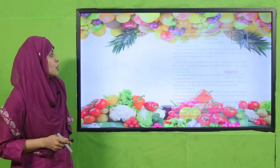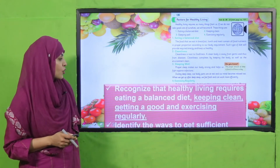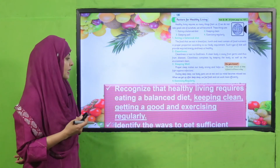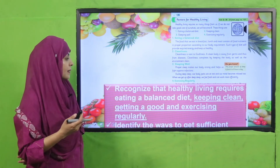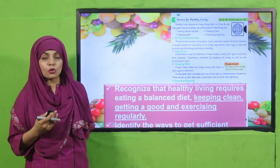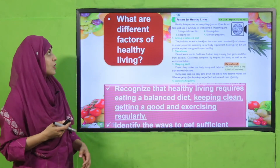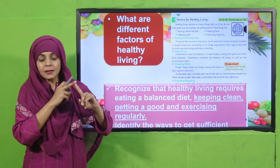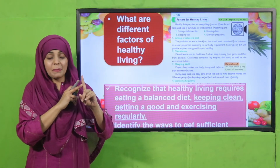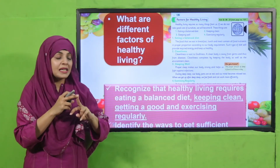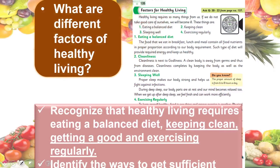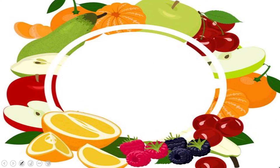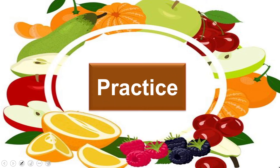In the next lecture, we studied that keeping clean, eating well, and exercising regularly also keeps us healthy. The different factors of healthy living are: a balanced diet, keeping ourselves clean, keeping our environment clean, and taking regular exercise. These are the different factors for keeping ourselves healthy.